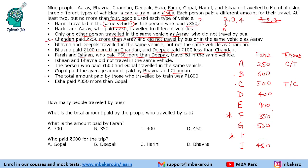Bhavana and Deepak travelled in the same vehicle, but not in the same vehicle as Chandan. Now, if Chandan is travelling by train, Bhavana and Deepak would travel by cab — but Arav already has only one other person by cab, making three, which is not possible. Similarly, if Chandan is by cab, Bhavana and Deepak would go by train — again three people, not possible. So Bhavana and Deepak must be travelling by bus.